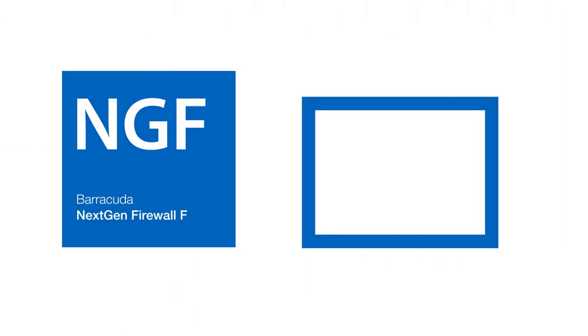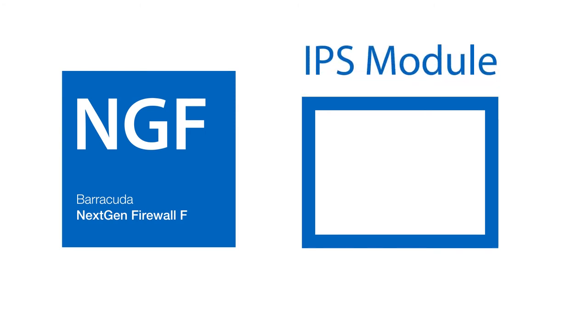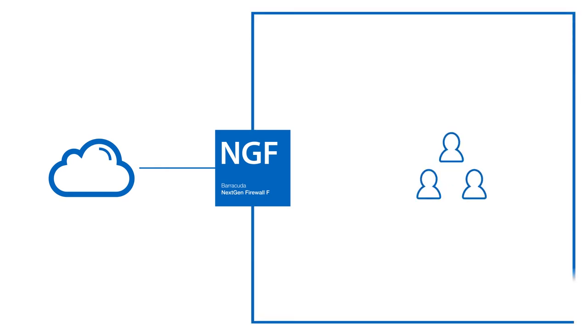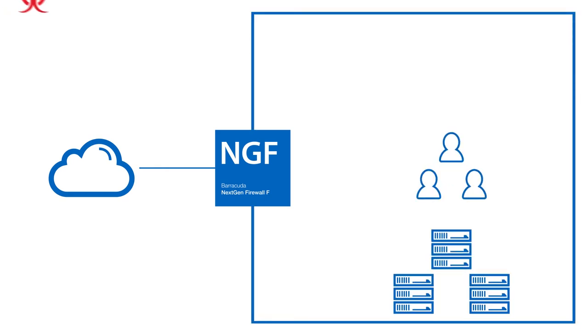Some NG firewalls, like those from Barracuda, also feature an IPS module which helps secure your server infrastructure like Windows Server, IIS, and Apache from known attacks. The NG firewall thus helps you secure your network, users, and servers from known attacks.